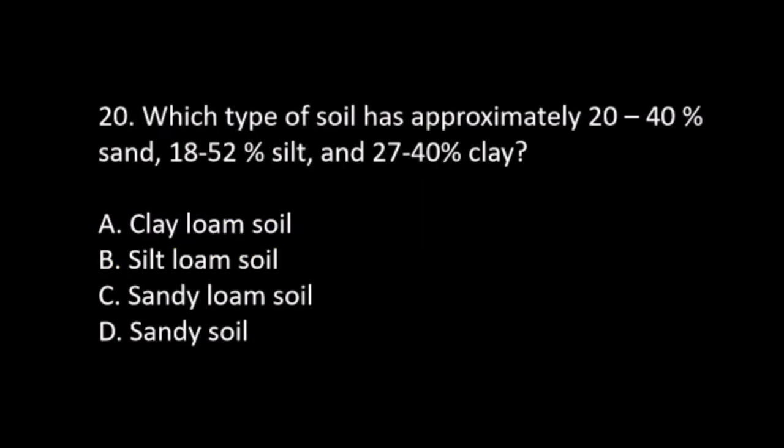Number 20. Which type of soil has approximately 20–40% sand, 18–52% silt, and 27–40% clay? A. Clay loam soil. B. Silt loam soil. C. Sandy loam soil. D. Sandy soil. The answer is A. Clay loam soil.